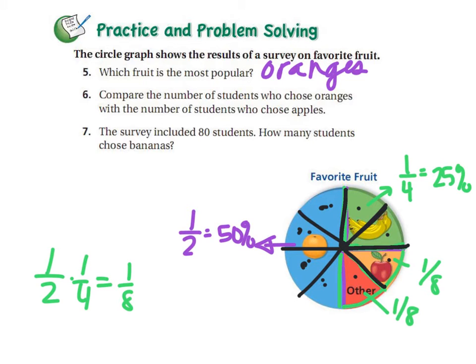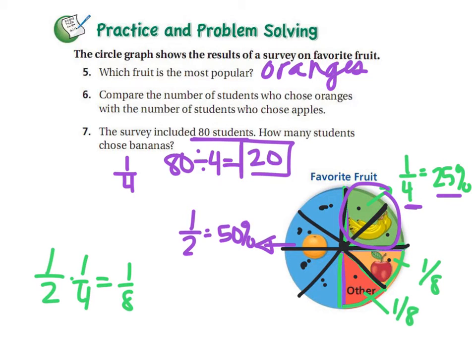The last type of question says the survey included 80 students - how many students chose bananas? Let's look. I know a fourth of the students chose bananas or 25%. So I can find a fourth of 80. Think about splitting 80 into four parts. That is 20. So 20 students chose bananas.